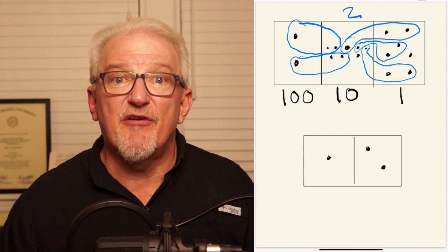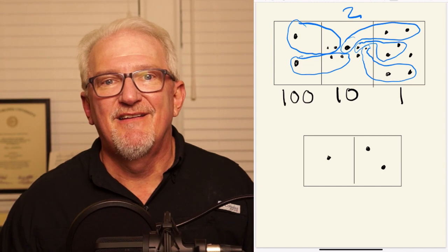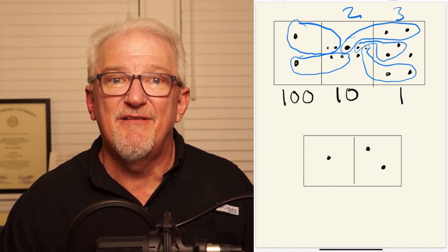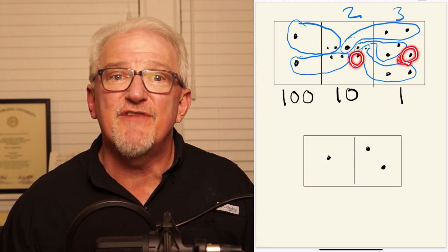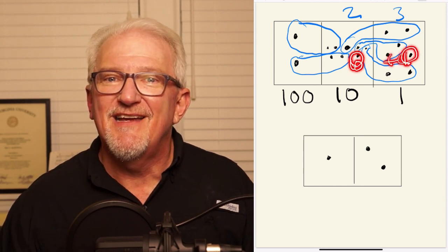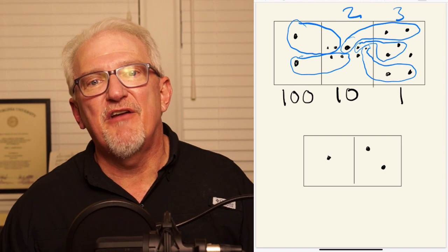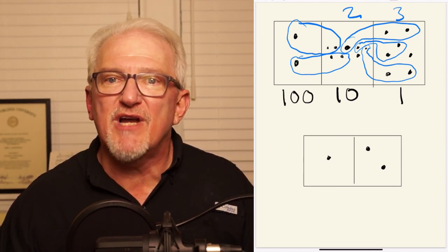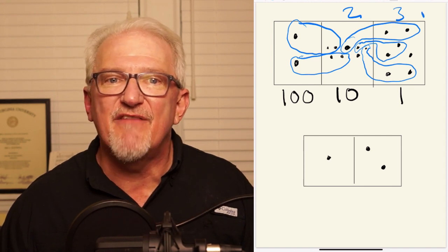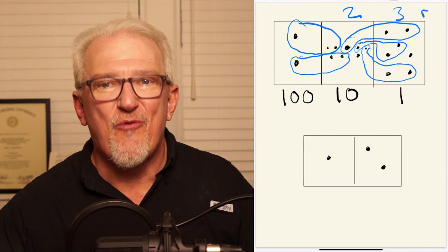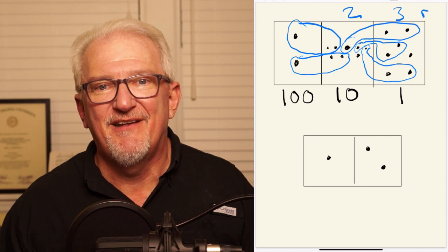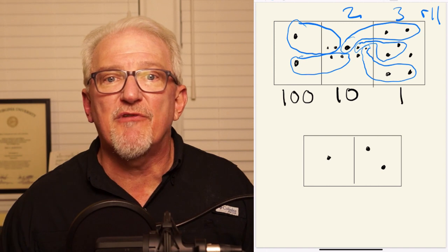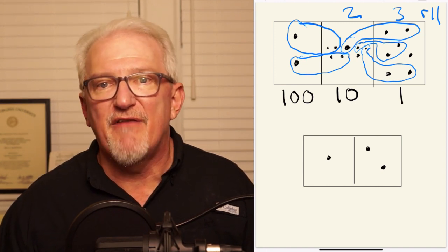As we can see, there are now 11 dots that remain. Because this number of dots is fewer than 12, our procedure of picture division is complete. And we can now declare that there exist 23 groups of size 12 in our original collection of 287 dots, with a remainder of 11. That is, 287 divided by 12 is equal to 23 with a remainder of 11.